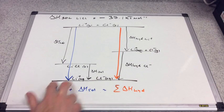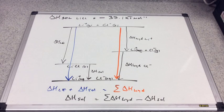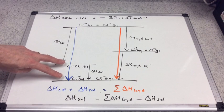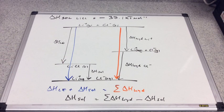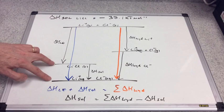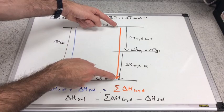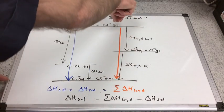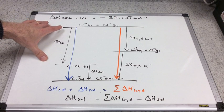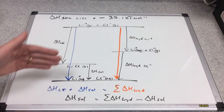We take the lattice enthalpy over to the other side, and it becomes minus delta H LE — exactly the same equation as before. Now we can explain why this one is exothermic while sodium chloride is endothermic. The lattice enthalpy line is shorter than the sum of the hydration enthalpies, so the hydration enthalpies are outweighing the lattice enthalpy, and the difference continues to go down — that's exothermic.